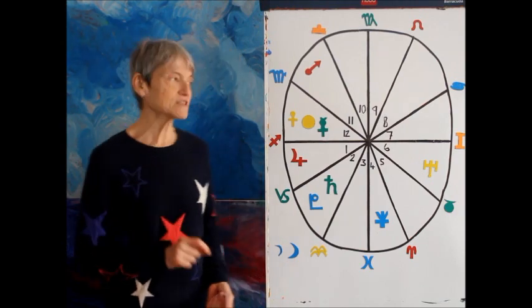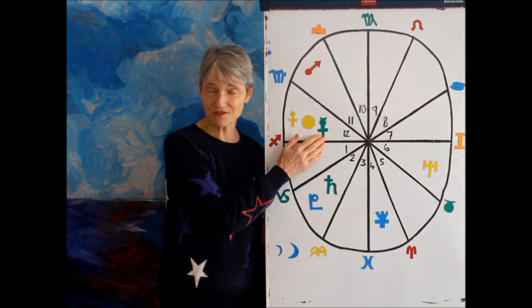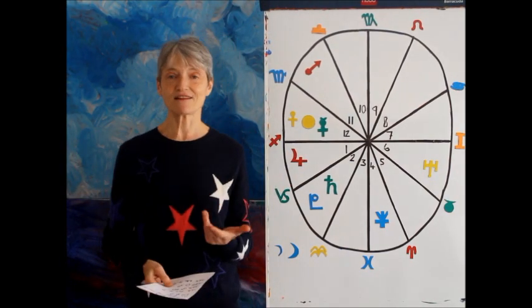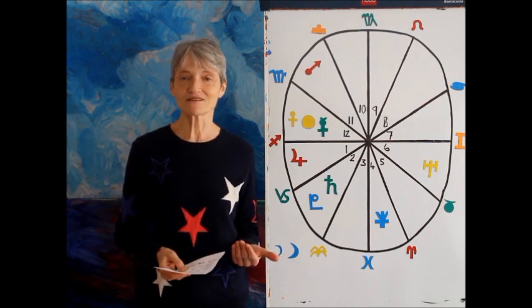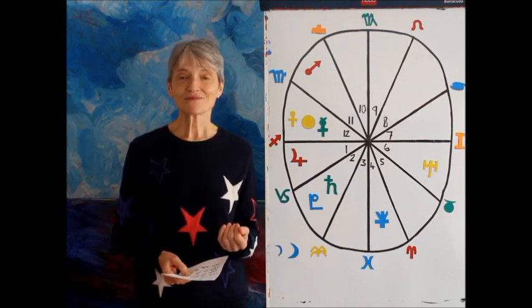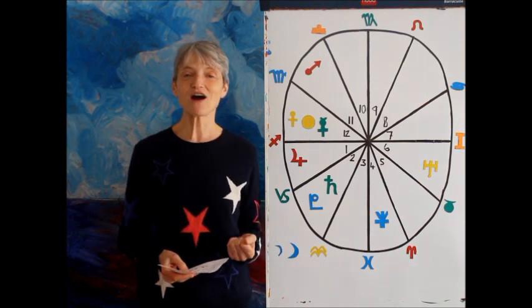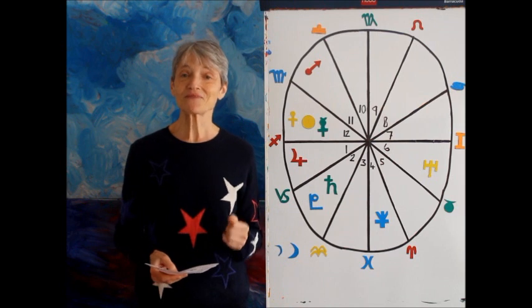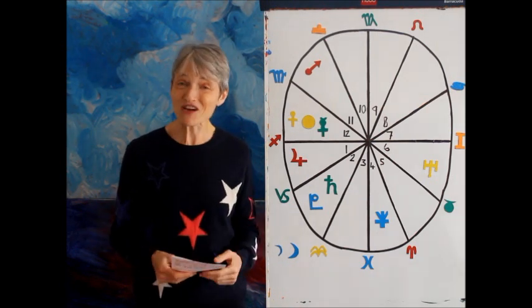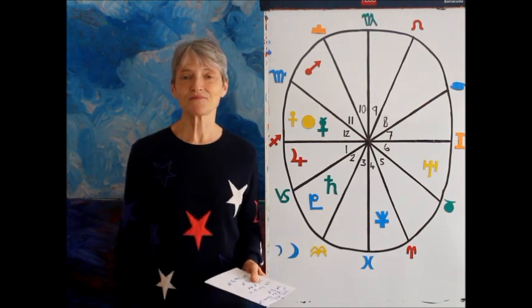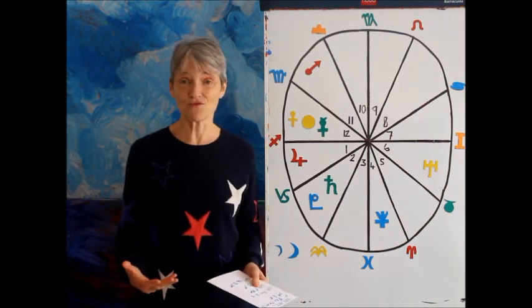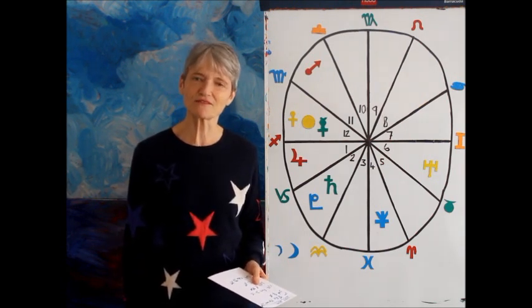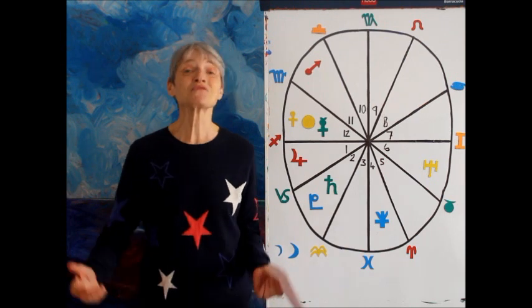For you this Mercury retrograde is happening in your 12th house. So this is a wonderful opportunity to complete anything, anything that's been in process. It could be a deal, it could be something you've been negotiating for a while. Whatever has been ongoing during Mercury retrograde, it's a great time for bringing it to fruition.